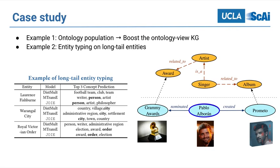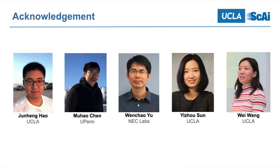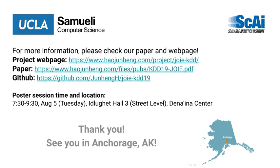It will be useful to predict the type of newly observed entities for better disambiguation. For example, if we don't know who Pablo Oberon is, but we know the fact that he has an album named Pulmeto or was once nominated for a Grammy Award, Joey can utilize such information to predict that he is likely to be a singer by learning the embeddings. For more details, please check our paper and web pages. See you in Anchorage, Alaska.